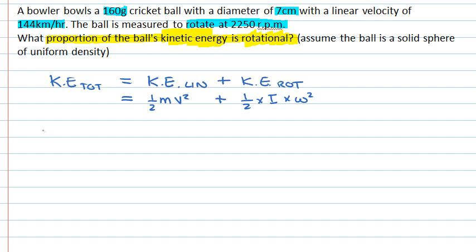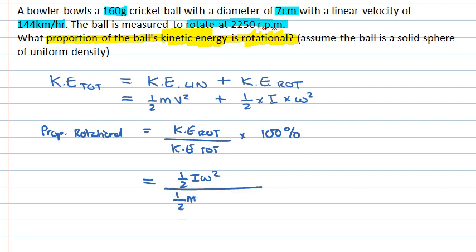In this problem, we're trying to find the proportion that is rotational. That will be the rotational component of the kinetic energy divided by the total kinetic energy. Let's find it as a percentage, so we'll times that by 100%. Filling in our expressions for those quantities, that gives us a half times the moment of inertia times the angular velocity squared, over the total kinetic energy, which is the linear component plus the rotational component. You might notice that we can cancel some things out already. That leaves us with this expression: I omega squared over mv squared plus I omega squared.